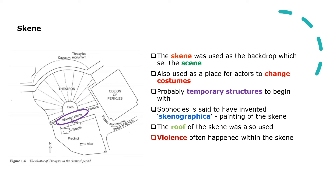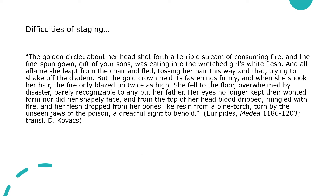There are different reasons violence may have happened off stage — perhaps relating to religious aspects, the tastes of the audience, or the difficulties of staging gory scenes. Take for example the scene in Euripides' Medea when Glaucé is ensnared by Medea's poison robe and diadem: 'The golden circlet about her head shot forth a terrible stream of consuming fire... her flesh dropped from her bones like resin from a pine torch, torn by the unseen jaws of the poison — a dreadful sight to behold.'